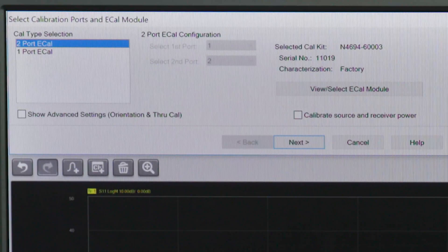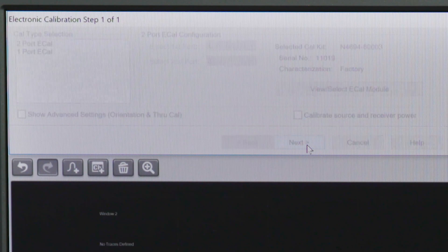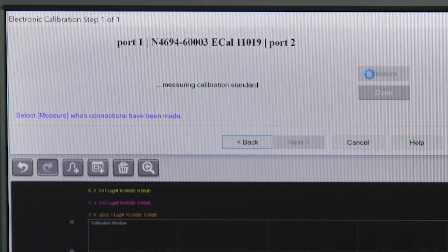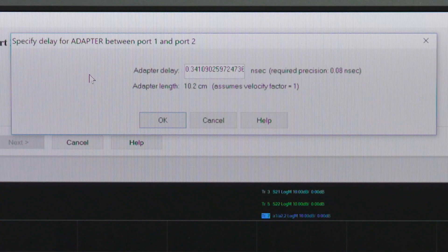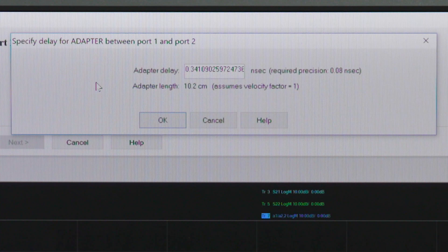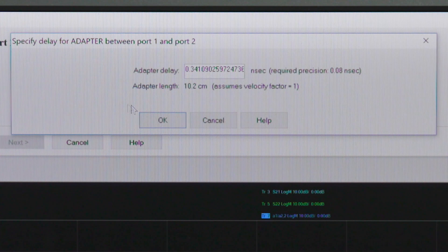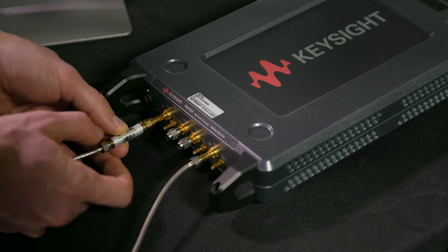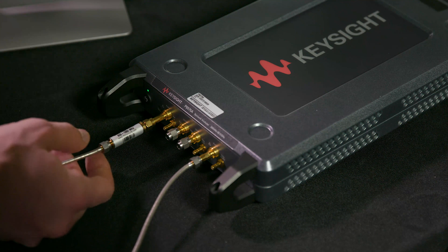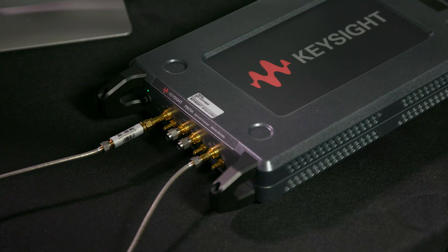We're going to do two-port ECOW and leave the default settings. Select Measure. Once the calibration is complete, you will see a message like this pop up on screen showing that the calibration has been saved to the channel. Now, let's connect the DUT to port 1 and the test cable coming from port 2 and ensure we can see the signal on screen.